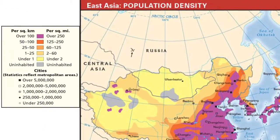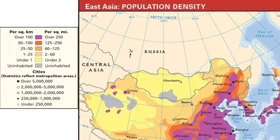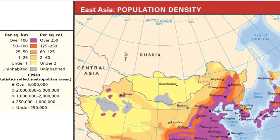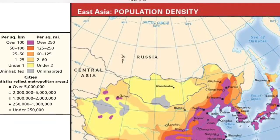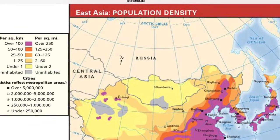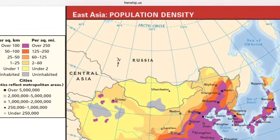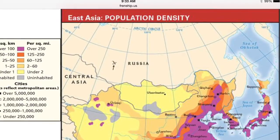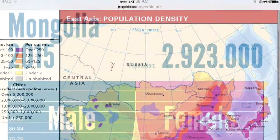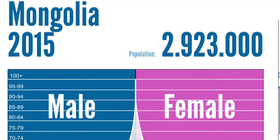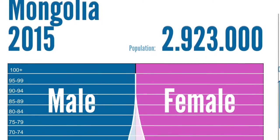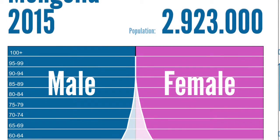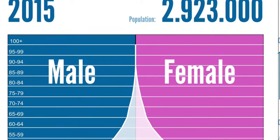Mongolia looks like a newly industrialized country in East Asia based on its low life expectancy. It has a high infant mortality rate and high literacy rate, but it's not taking account of how much nomadic population is not taking part in this. The population pyramid of Mongolia shows that they recently had a decrease in population for teenagers from 10 to 19-year-olds.